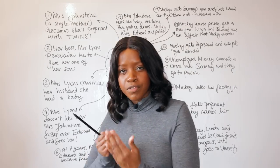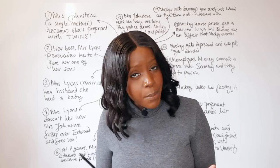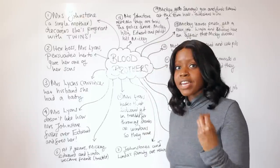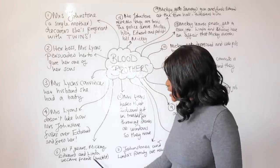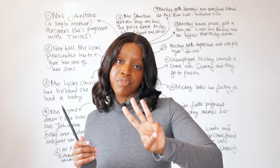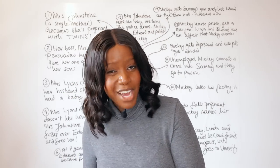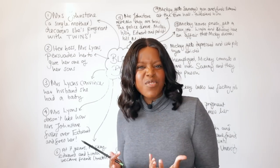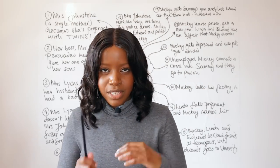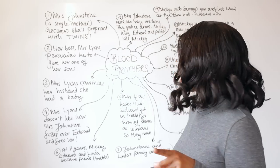Time passes, and we see that Mrs. Johnstone, Mickey, and their family lead a much more difficult working-class life compared to Mrs. Lyons, her husband, and Edward. However, at seven years old, Mickey and Edward finally meet and become really good friends. Also in the mix is Linda, a girl from Mickey's estate, and the three become an inseparable trio. Edward, who goes to a rather snobby primary school, really enjoys how edgy and fun Mickey and Linda are.